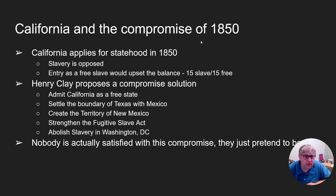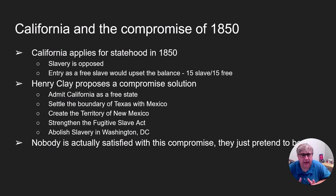California gains enough population to apply for statehood. Gold is discovered in 1848 and 1849, the gold rush happens, and by 1850 there are so many people living in California that it applies for statehood. In California, they go anti-slavery — not because they were truly anti-slavery, but because they were anti-anybody taking their gold. Slavery was opposed because they didn't want people coming in to claim gold.